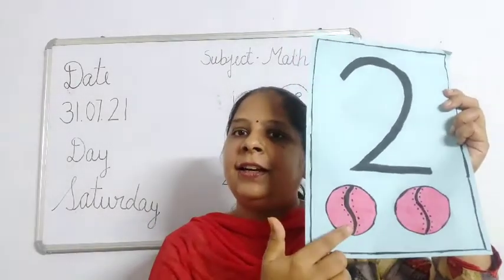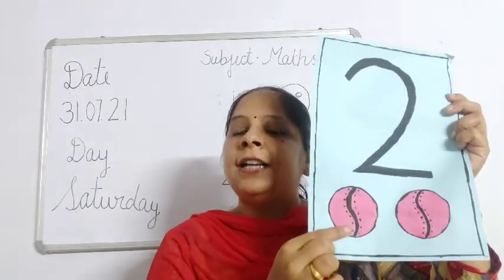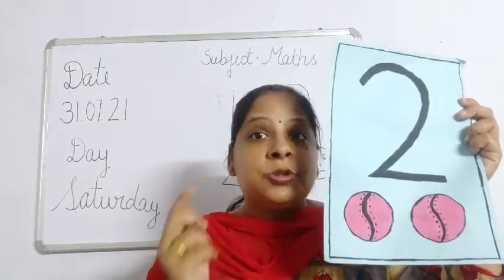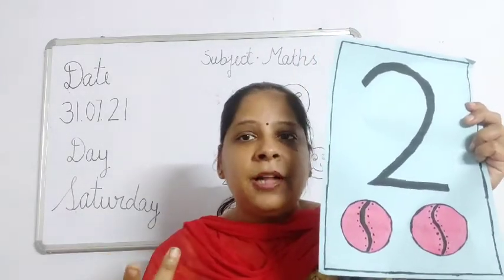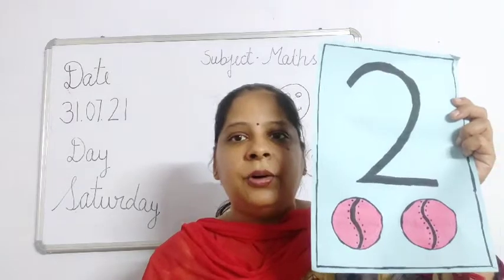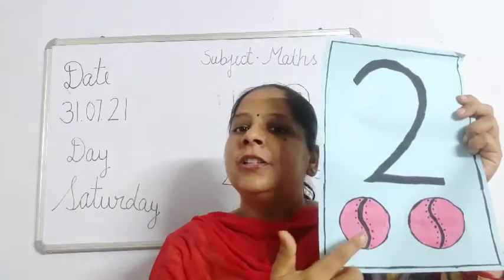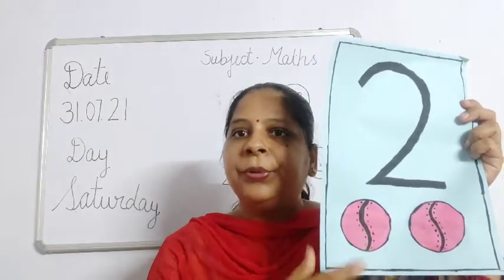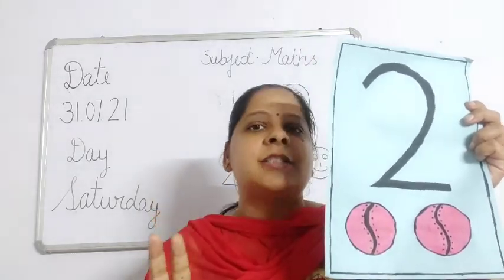So children, you can see here — here are 2 balls. How many balls? Let's count. 1, 2. 2 balls.